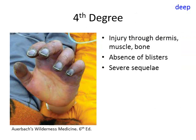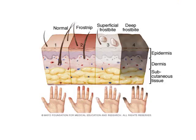This is an example of fourth degree frostbite, also a deep frostbite. There is injury through all layers of the dermis, extending to muscle and bone. There is absence of blisters and absence of sensation to the frostbitten area. There are severe sequelae resulting in amputation of the digits. A schematic also shows the extension of cold-induced injury as it relates to skin tissue layers.